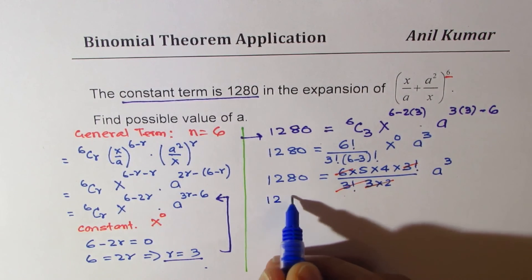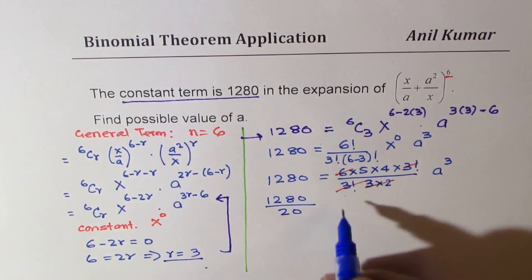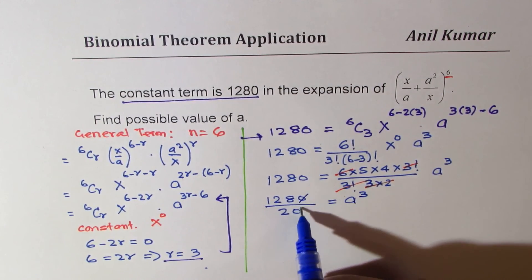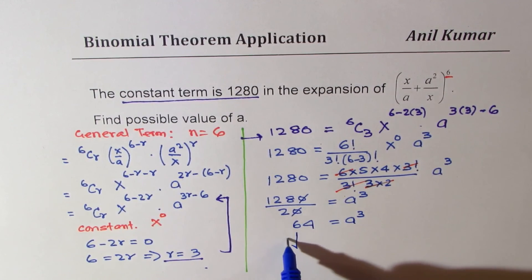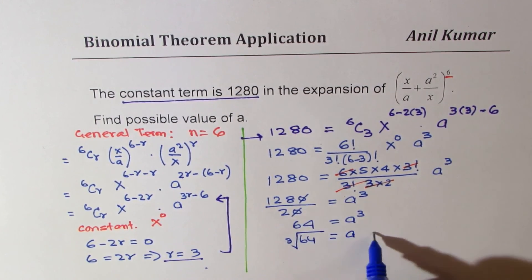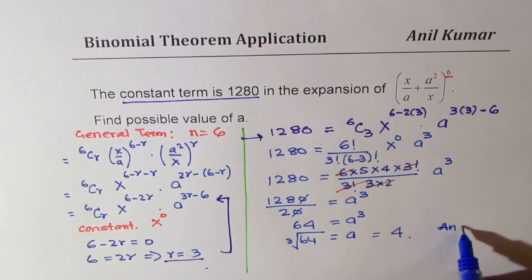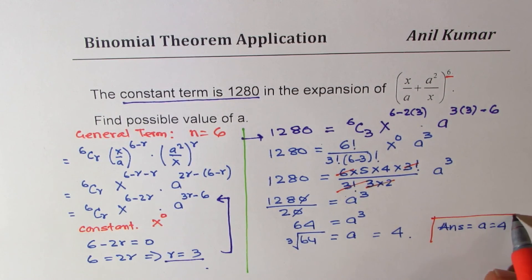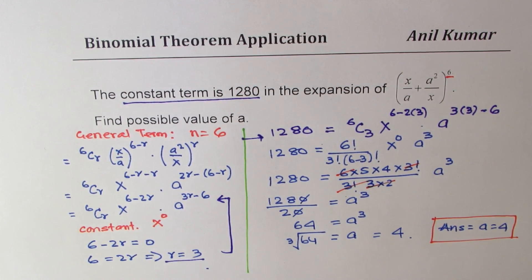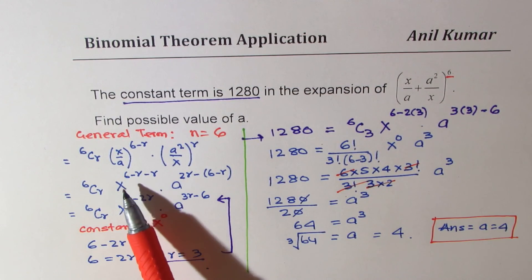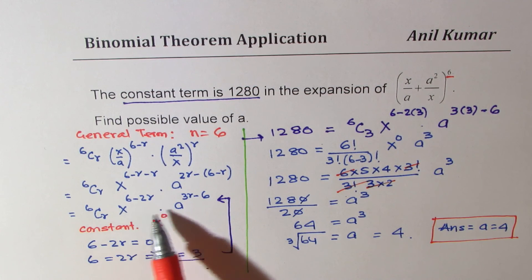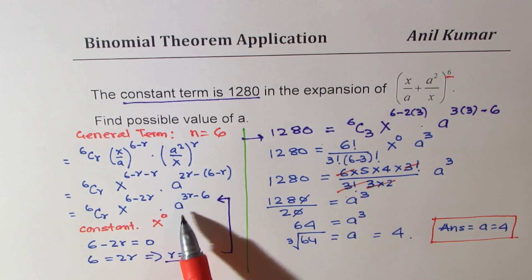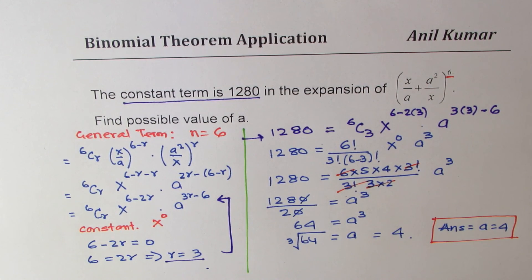So we get our answer: a = 4. The approach is: write the general term, equate the exponent of x to 0 to find r, then substitute r back into the general term and equate it to the given constant 1280 to find the value of a. I hope that is absolutely clear.